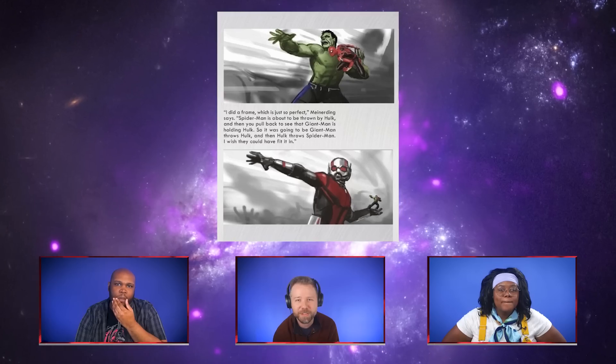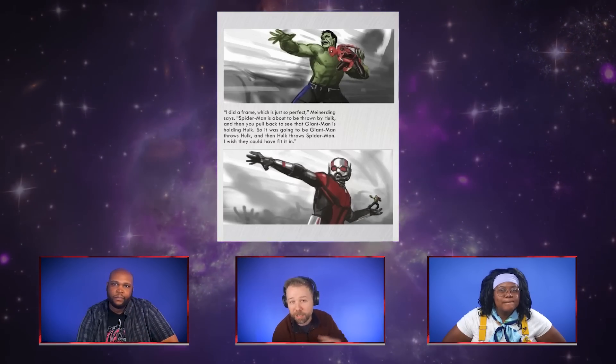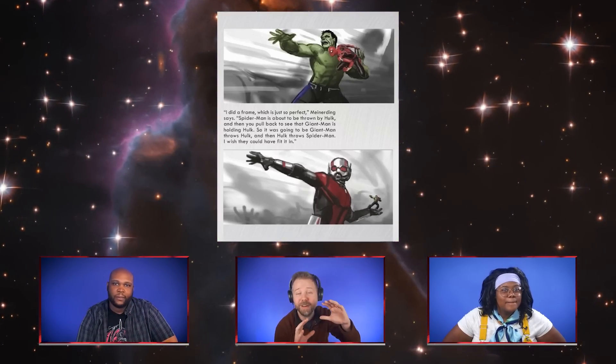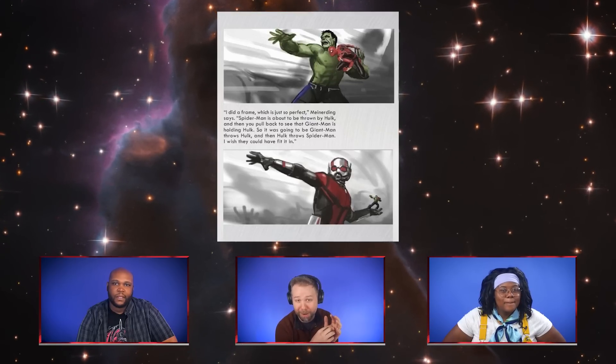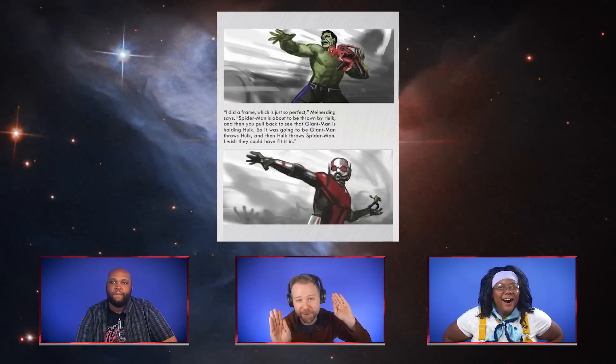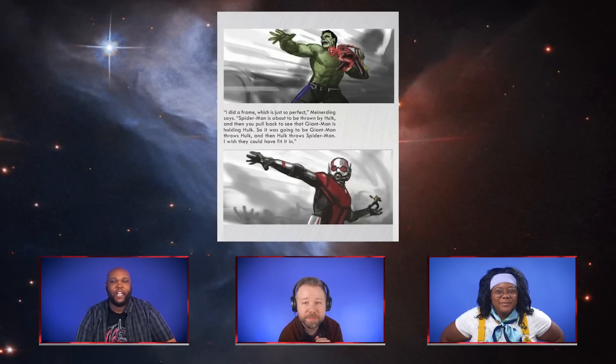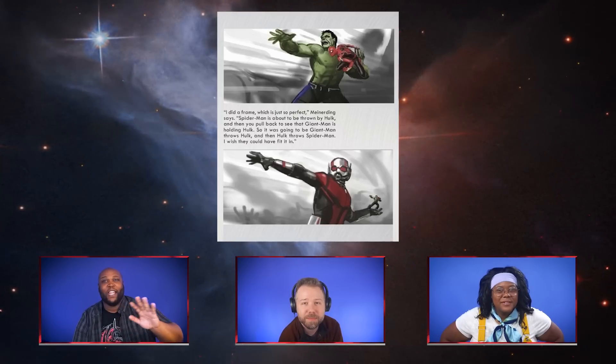Let's talk about this Endgame concept art. There was going to be a shot where you start with Spider-Man in Hulk's palm — Hulk is going to launch Spider-Man — then we zoom out and Hulk is in Giant-Man Scott Lang's palm. So it's a throw, a throw, a throw: a triple assist. This would have been freaking awesome in the movie. People would have gone crazy for it.